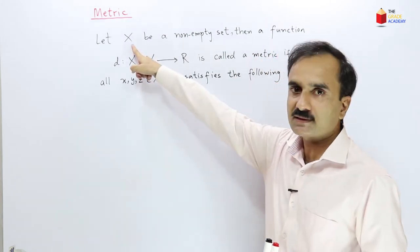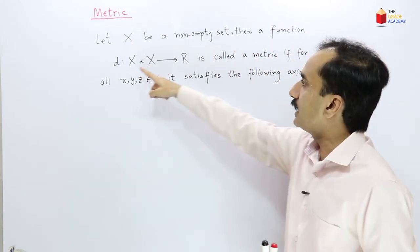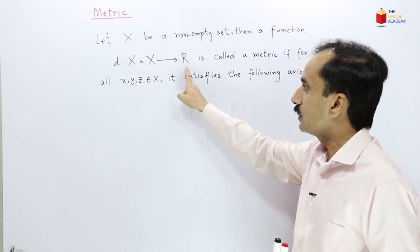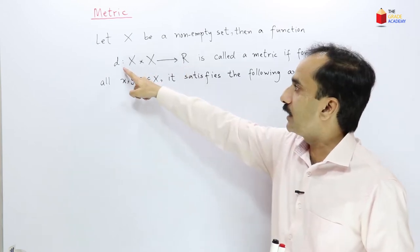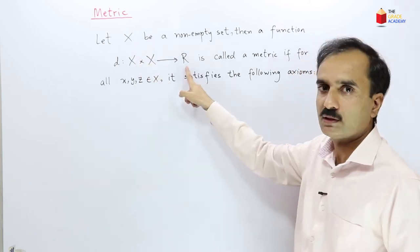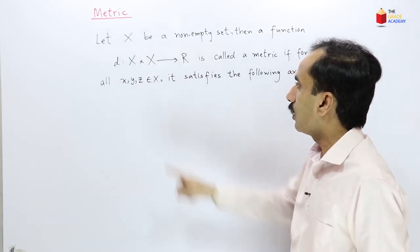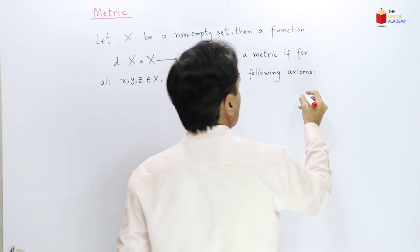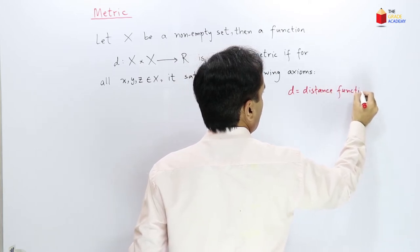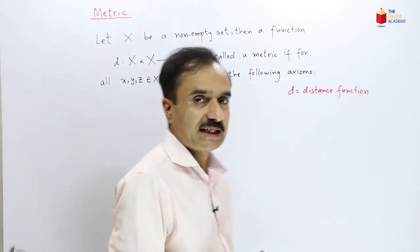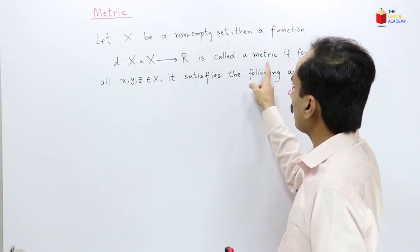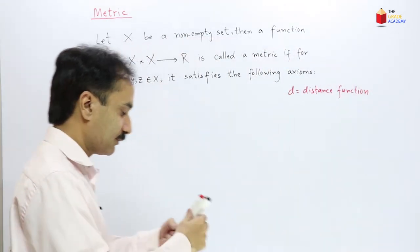We consider a non-empty set X, then a function d from the Cartesian product of the set X with itself to the set of real numbers. This means that the function d takes an ordered pair from the set X and maps that ordered pair to a real number. This function d is also called a distance function. This function is called a metric if it satisfies the following axioms. Number 1.